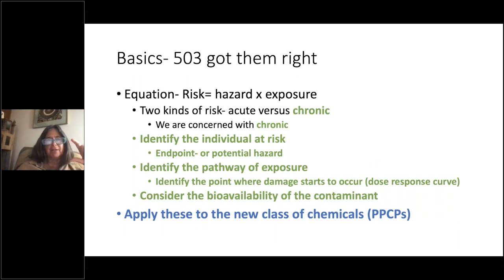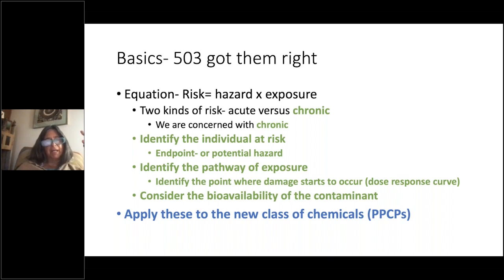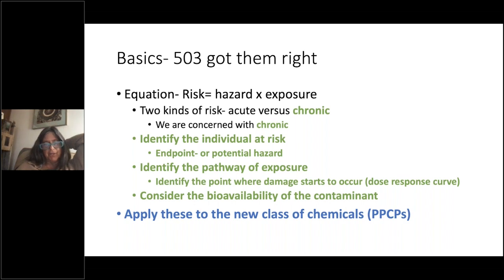When you look at biosolids regulations and the whole process of their development, they got almost all of this right: chronic toxicity, identifying the individual at risk, a range of exposure pathways, bioavailability of contaminants through field studies, and a dose-response curve. You can be really comfortable with the 503 regulations on biosolids for both metals and the organics that were considered. Back in the day, there were things like dioxins that could cause acute toxicity. But in the last 15 to 20 years we have a new class of chemicals — pharmaceuticals and personal care products — and one could argue that PFAS fits into that grouping.